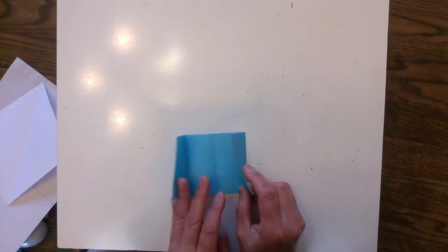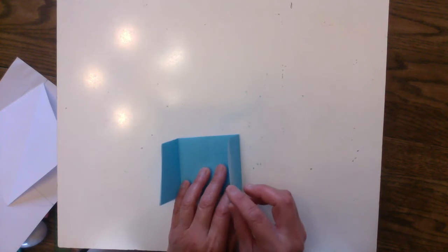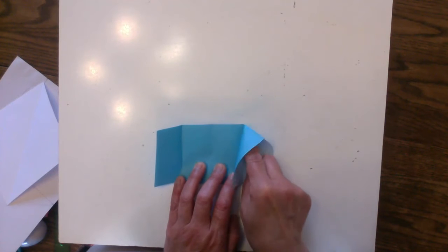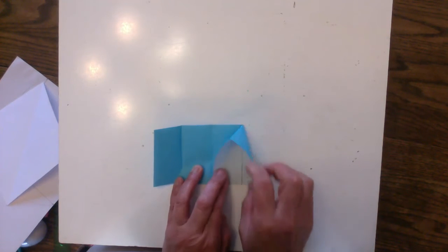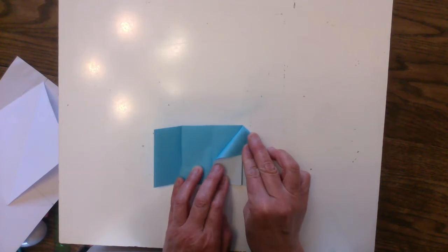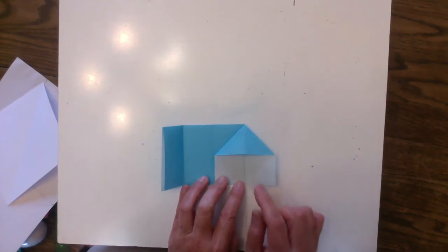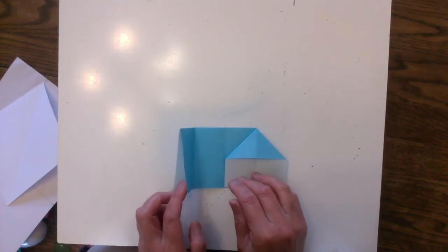And you put your index finger in that corner. Do you remember how you did that? And then push it down so that this side will look like a house.